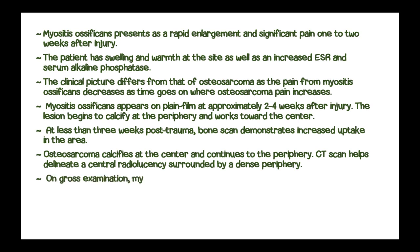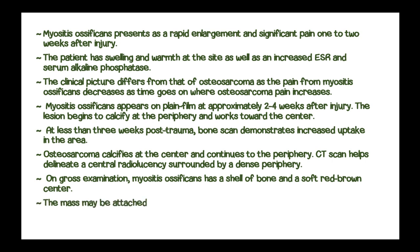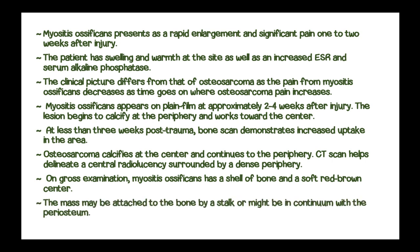On gross examination, myositis ossificans has a shell of bone and a soft red-brown center. The mass may be attached to the bone by a stalk or may be in contact with the periosteum. Alternatively, the mass may be attached only to the muscle.